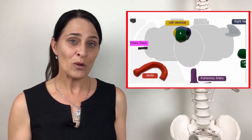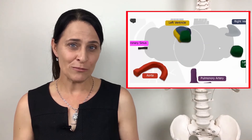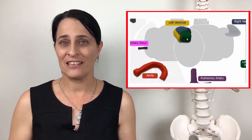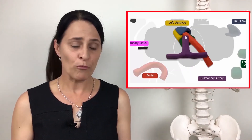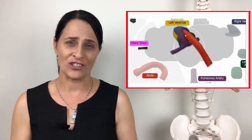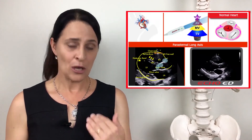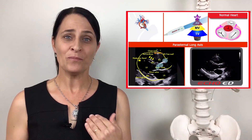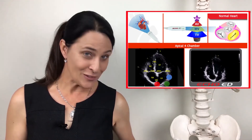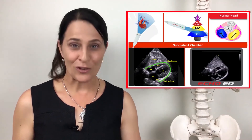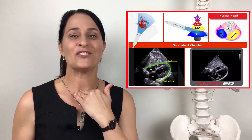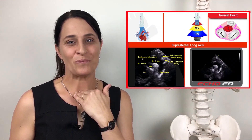We will then spend some time looking at the images that we can obtain from four areas on the chest: parasternal, apical, subcostal, and suprasternal.